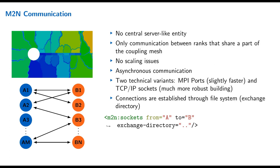In the config, for M2N communication with sockets: we define a connection between A and B. The 'from' and 'to' direction is not critical — it can have a performance impact for very large cases but never causes a deadlock, so you can choose freely. You also need to define an exchange directory, and this directory must point to the same location from both solvers. In the earlier example, both solvers started from subdirectories and '../' pointed to the same parent location — that's where hidden files are exchanged to establish the connection.